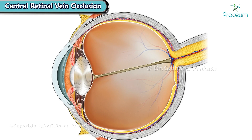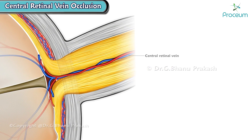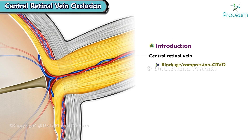Hello there, everyone. In this module, we'll be learning about central retinal vein occlusion. Let's begin with a quick introduction. Central retinal vein occlusion is a condition characterized by the blockage or compression of the central retinal vein, which is responsible for draining blood from the retina.